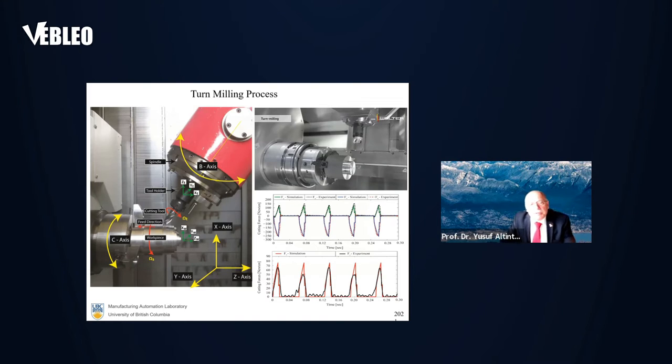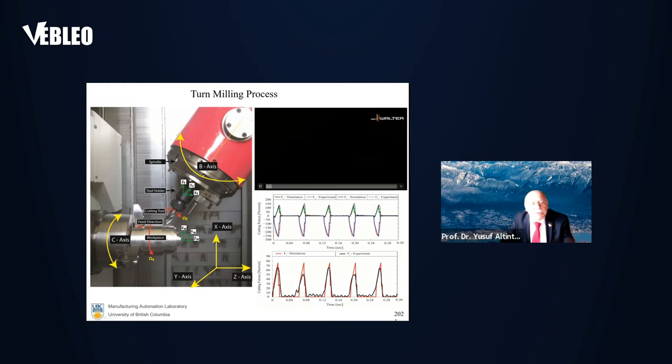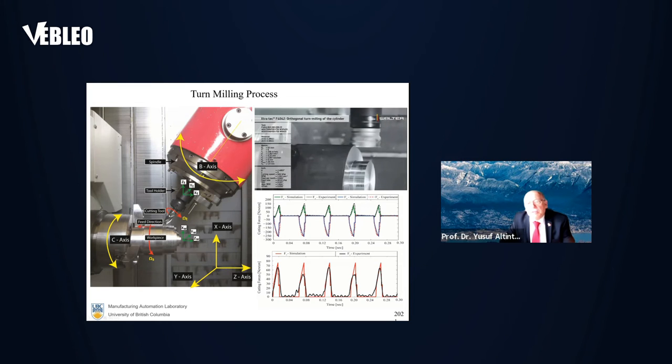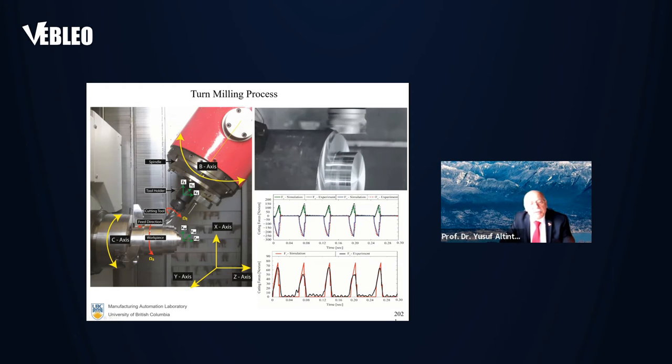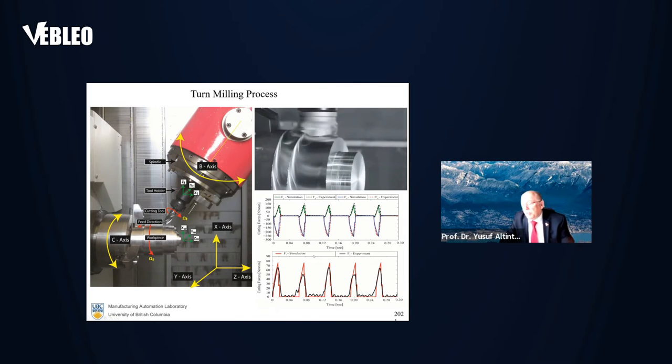Here is another complicated machining operation. We have a turning operation here. As you see, we have double spindle, and the part is mounted on one spindle, while the tool is another spindle. And we are able to predict this as well.